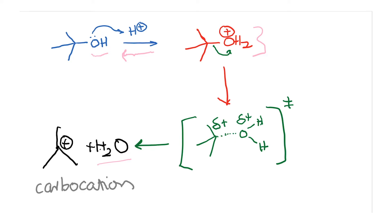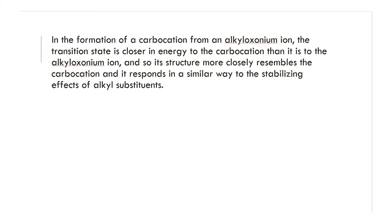In this process, there would be a transition state where the bond between the carbon and oxygen starts to break. The oxygen already has a full positive charge, so there is a partial positive charge developing on the carbon as well — a delta plus on both. Then there is complete bond cleavage to produce a full-fledged carbocation and water leaves. The Hammond postulate says the transition state is closer in energy to the carbocation.